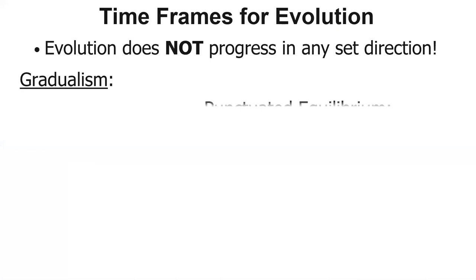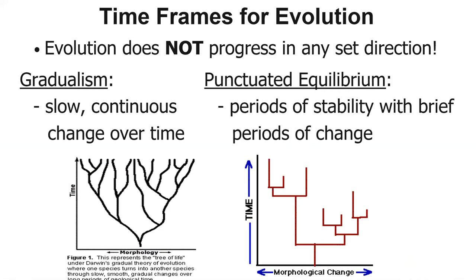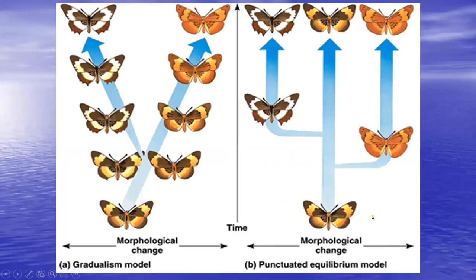We have different timeframes for evolution. We have some examples of evolution happening very slowly with minor changes over time — that's a concept we call gradualism. Then we have some evidence, like when the dinosaurs all got wiped out within a short period of time because an asteroid hit the Earth — we call that punctuated equilibrium. There were some periods of stability and then a big amount of change after stability. Both are accurate depictions of mechanisms of evolution.